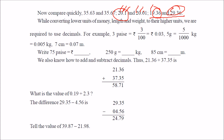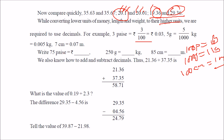We often need to convert one unit to another using decimals. For example, 3 paisa is 3 by 100 rupees, because 100 paisa equals 1 rupee. Similarly, 1000 grams equals 1 kg, and 100 centimeters equals 1 meter. So 75 paisa means 75 by 100 rupees, 250 grams means 250 by 1000 kg, and 85 centimeters means 85 by 100 meters.